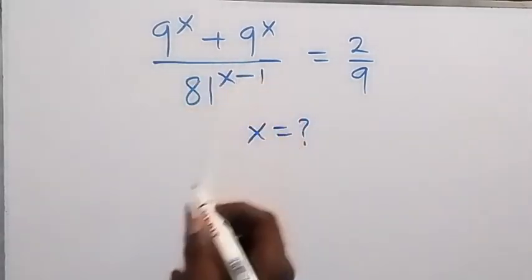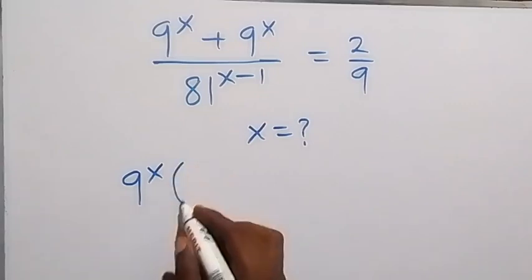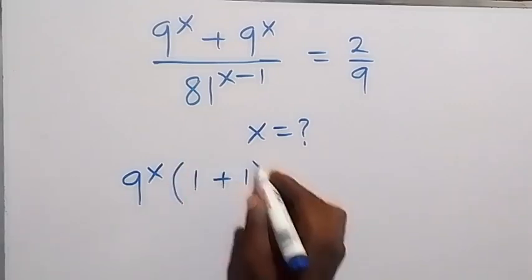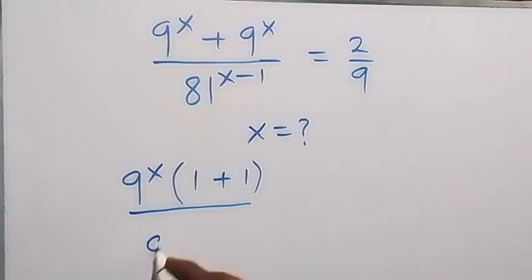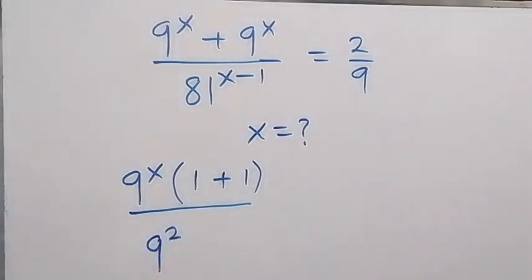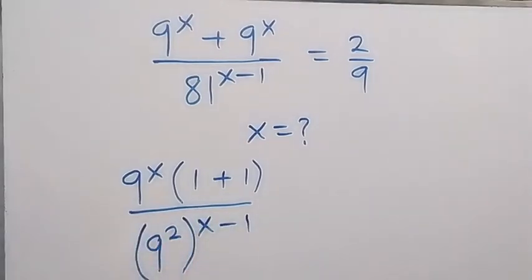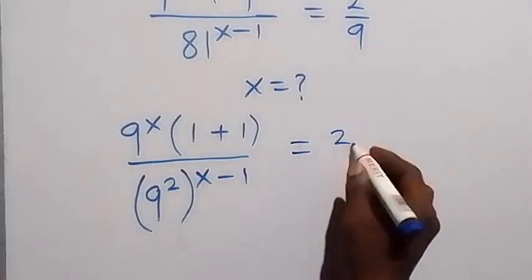We can factor 9^x out from the numerator, and this will be 9 raised to power x into bracket 1 plus 1. Then in the denominator, we change 81 into 9 squared, that's 9 times 9, raised to power x minus 1. This equals to 2 divided by 9.